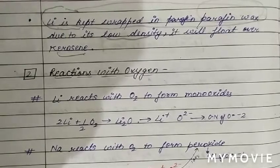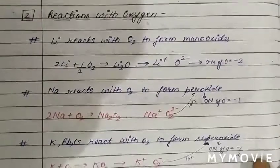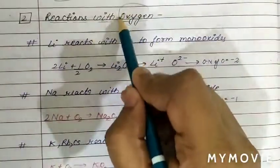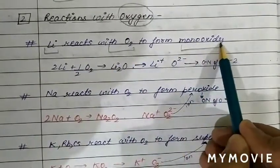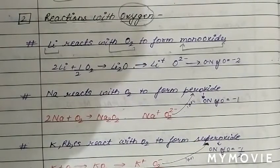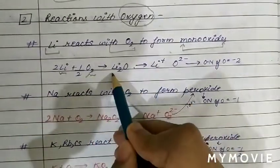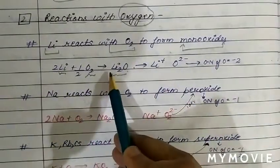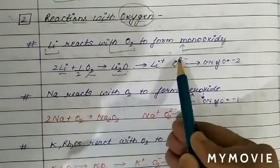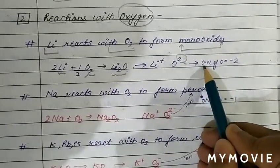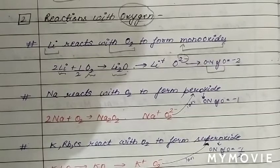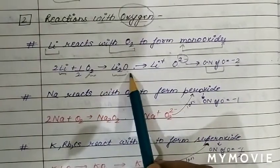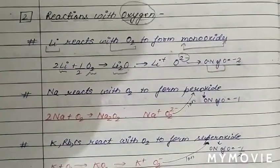The next chemical property is the reaction of alkali metals with oxygen. When lithium reacts with oxygen, it forms a monoxide — lithium oxide (Li₂O). In this case, the oxidation state of lithium is +1 while oxygen is in the −2 oxidation state, which is the oxidation state of oxygen in oxide form.